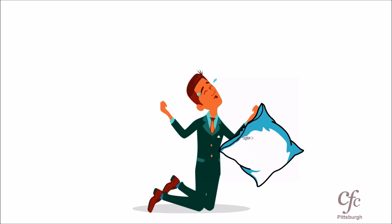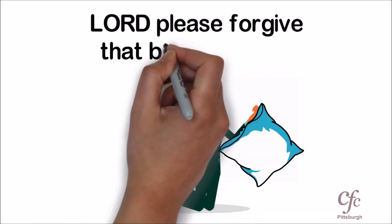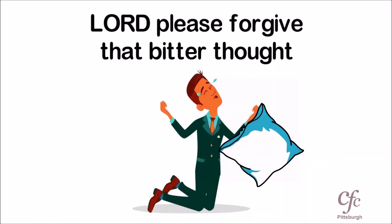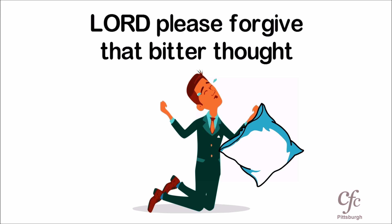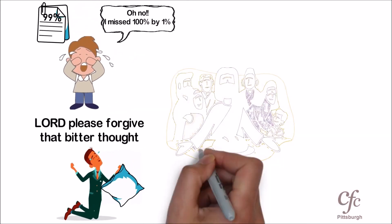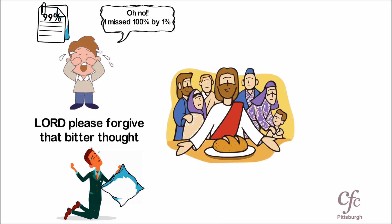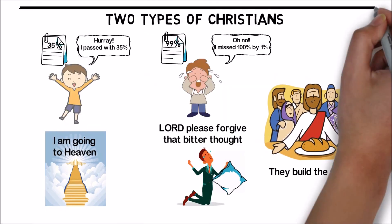And he weeps and the pillow is wet. For what? Something which 99% of believers don't even think about—a little bitterness against somebody. These are two types of Christians. One is seeking an indestructible life, and that's the one who will build the church.